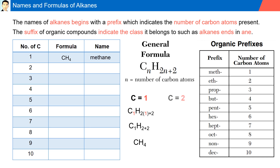For a molecule with two carbon atoms, plugging into our general formula we have C2H(2×2+2), giving us C2H6. Since there are two carbon atoms, the name starts with eth, and since it's an alkane it ends in -ane: ethane. For three carbon atoms, we get C3H8. There are three carbons, so the name starts with prop, and since it's an alkane it ends in -ane: propane.